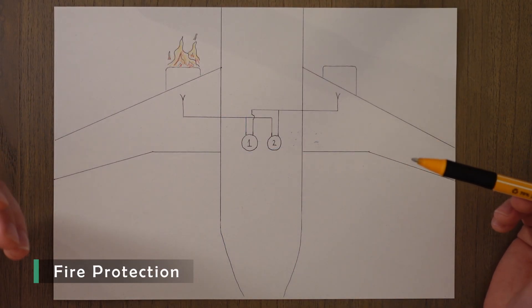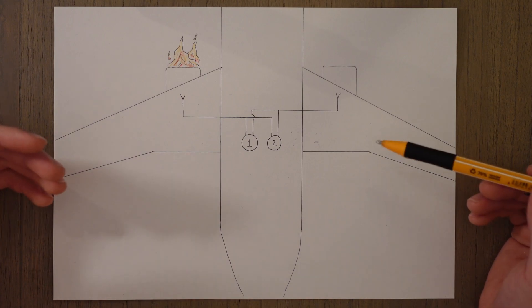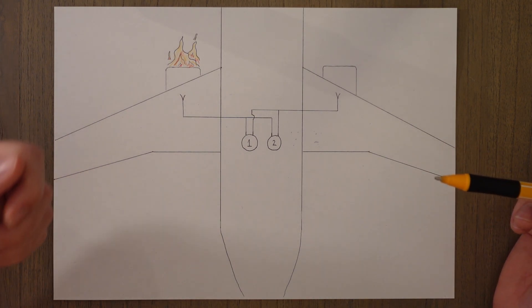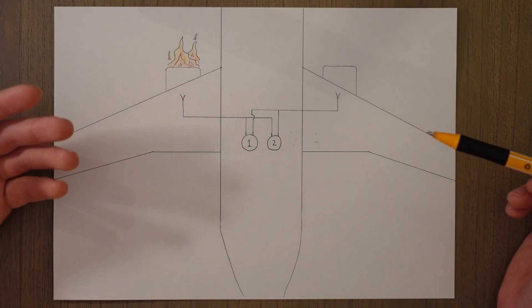Once we have detected smoke or fire we then need to put out the fire. The simplest way we can do this is through a handheld fire extinguisher which is what is used within the cabin where we can access the fire and fight it during the flight.